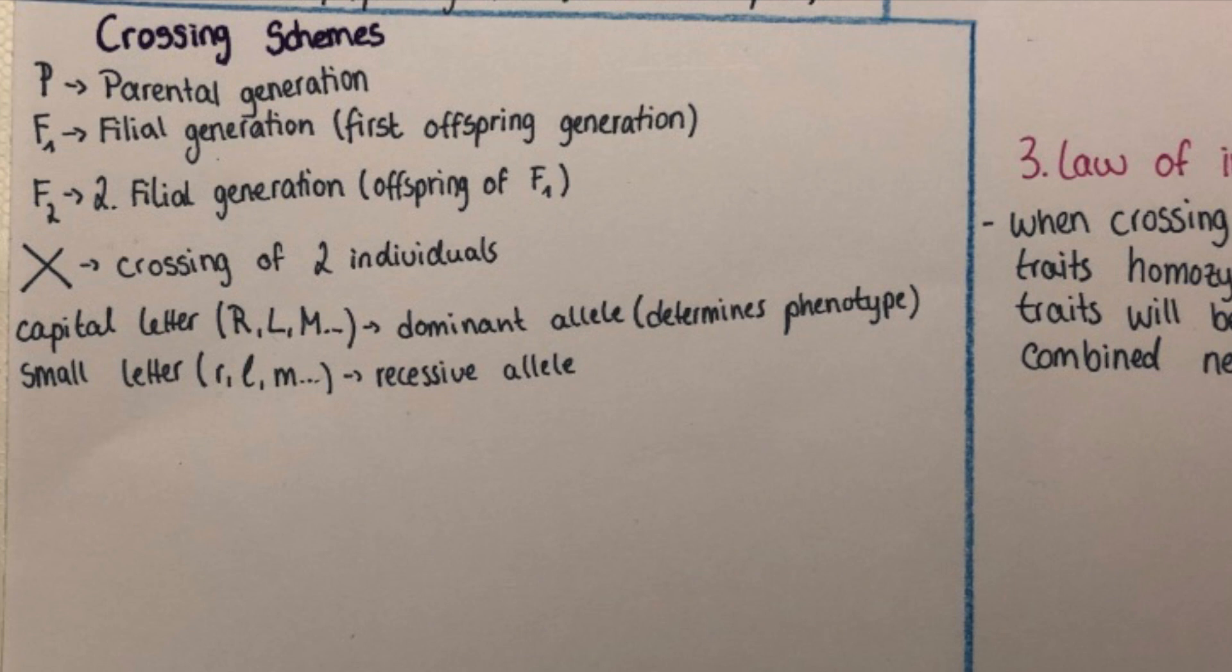And when we cross two individuals, we mark that with a cross, as you can see now in the visualization. And as I mentioned before, capital letters are for dominant alleles which determine the phenotype, and small letters are used for recessive alleles.